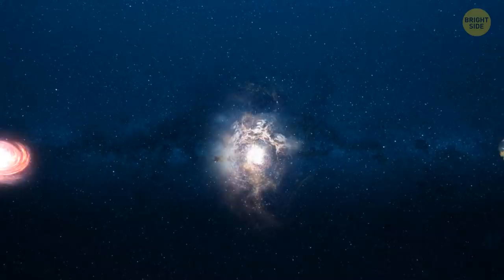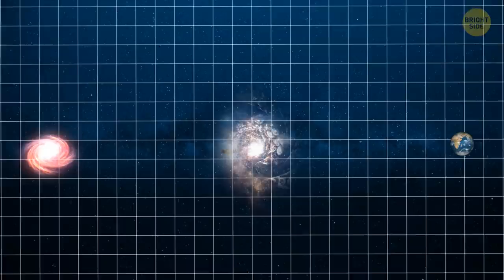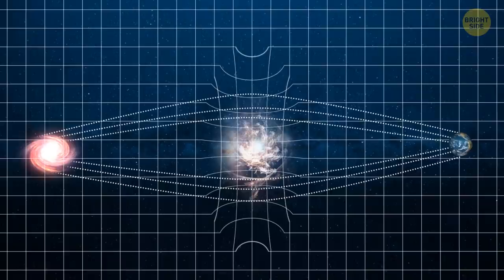These beams then encounter a cluster of galaxies, about 4.6 billion light years from Earth. This cluster acts like a lens, only it uses gravity instead of curved glass. The rays split and circle the cluster of galaxies from different directions and continue their movement toward Earth.